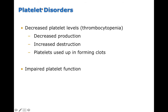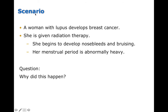Platelet disorders can come from a variety of mechanisms. Decreases in platelet levels — called thrombocytopenia — can result from decreased platelet production, increased destruction of platelets, or platelets being used up in clots. It's also possible to have a normal number of platelets that are functionally impaired due to genetic disorders, meaning they don't work properly even if present in normal quantities.